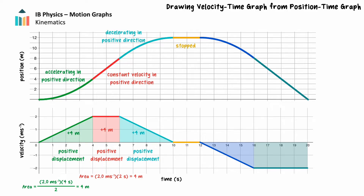For the next 2 seconds of motion, the object is stationary. From the position-time graph, we can see the object's displacement in this segment is 0 — the object remains at positive 12 meters. On the velocity-time graph, there is no area between the graph and the time axis because there is no displacement.